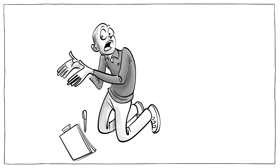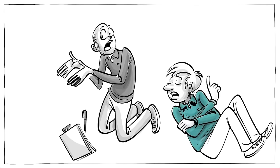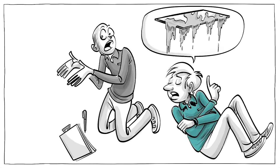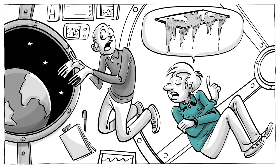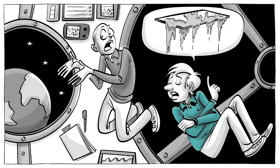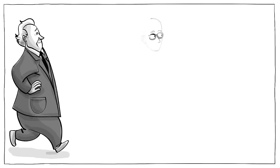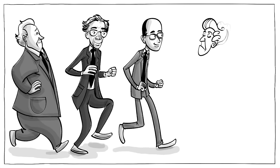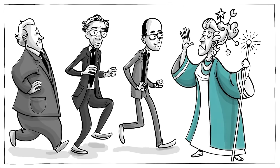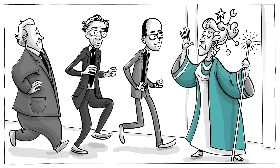Festinger then examined whether cognitive dissonance can be strong enough to believe in conspiracy theories even after they are proven wrong. To do so, two colleagues and Festinger joined a small apocalyptic cult led by Dorothy Martin, a suburban housewife.